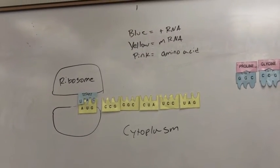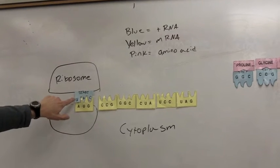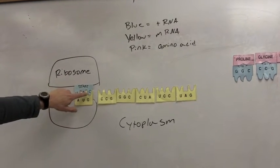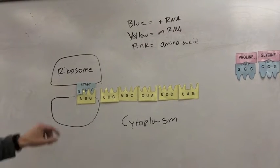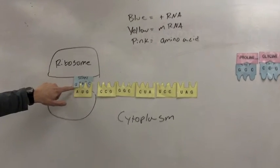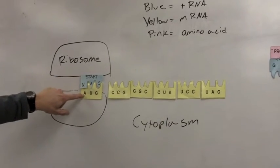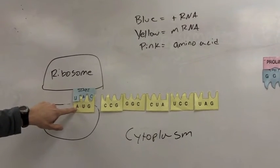And the transfer RNA has three nucleotides as well. This one's uracil, adenine, and cytosine, and we call that the anticodon. It's the opposite or the complementary to the messenger RNA. So transfer RNA is anticodon, messenger RNA is the codon.